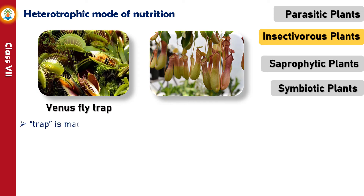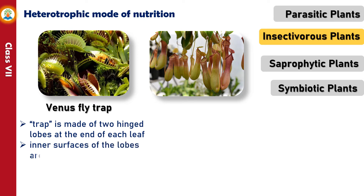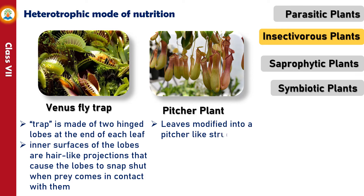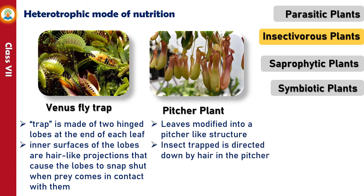In the Venus flytrap, the trap is made of two hinged lobes at the end of each leaf. On the inner surfaces of the lobes are hair-like projections that cause the lobes to snap shut when prey comes in contact with them. In the pitcher plant, the leaves are modified into a pitcher-like structure. Insects trapped are directed down by hairs in the pitcher, where they are digested by enzymes present in the juices inside.